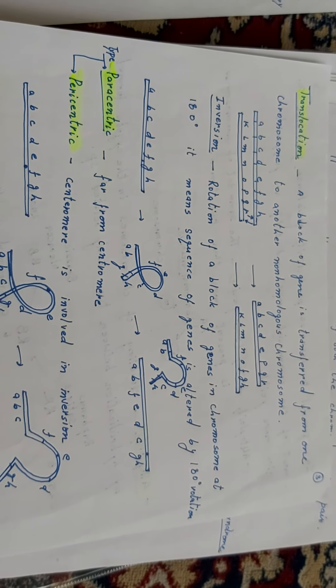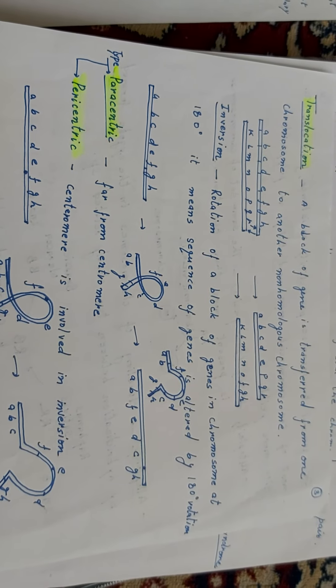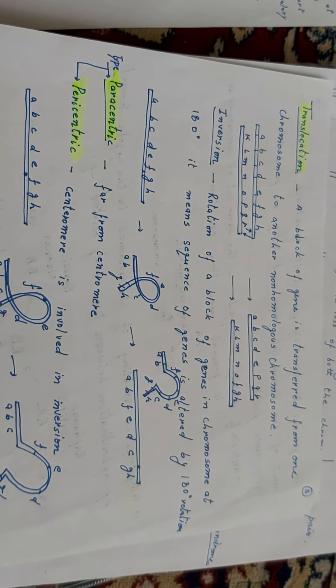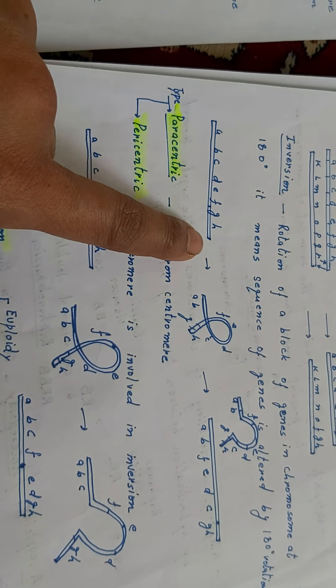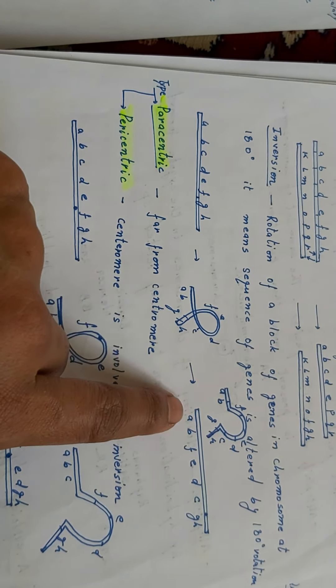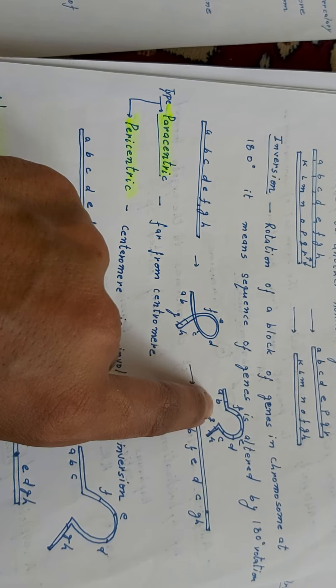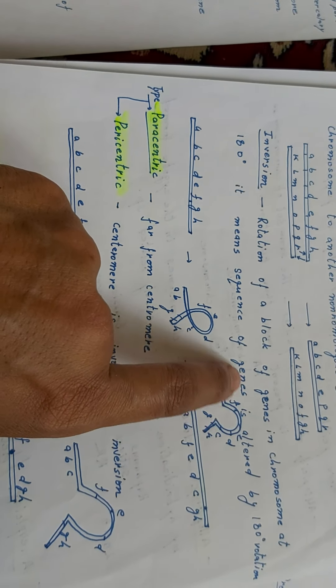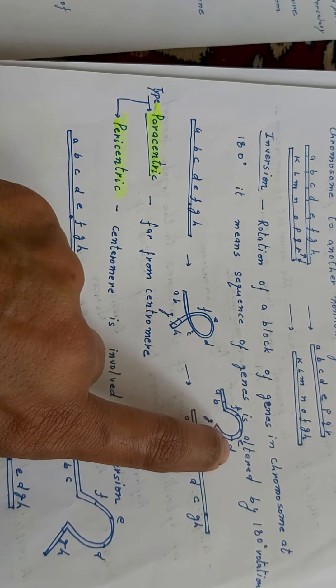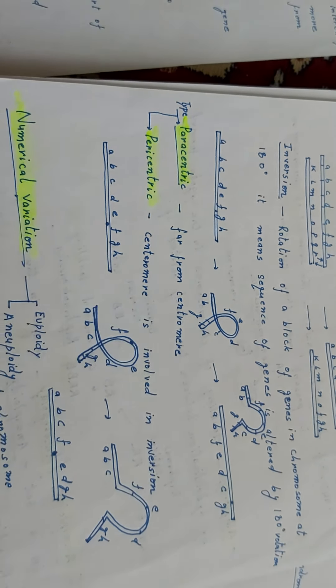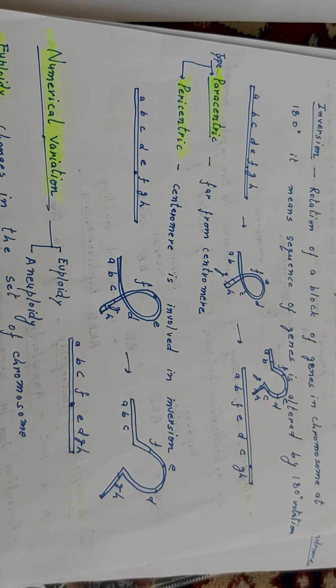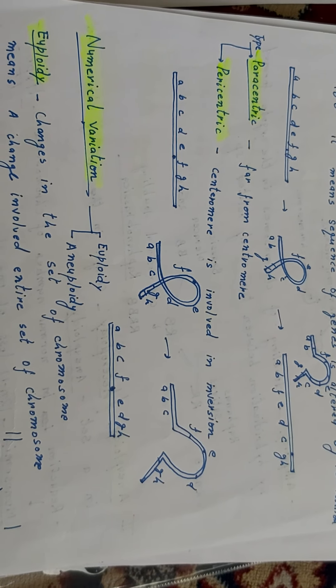Next is inversion: rotation of a block of genes in a chromosome at 180 degrees. This means the sequence of genes is altered by 180-degree rotation. A cut occurs in the chromosome and due to rotation the sequence that develops becomes: A, B — then instead of C, the rotated sequence gives F, E, D, C, G, H. So sequence rotation has occurred. Inversion is of two types: paracentric and pericentric.